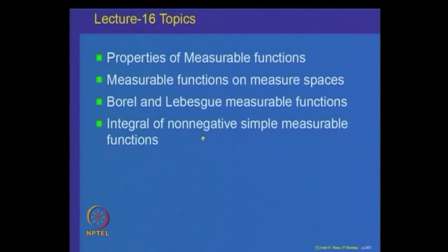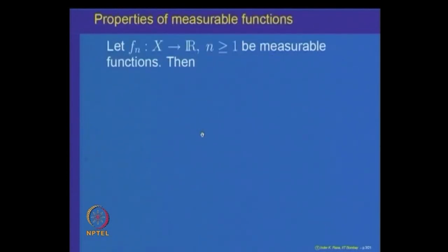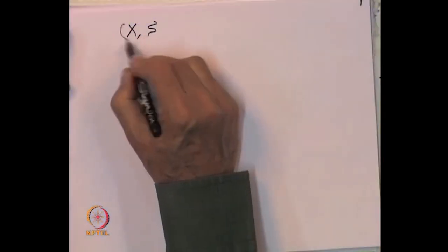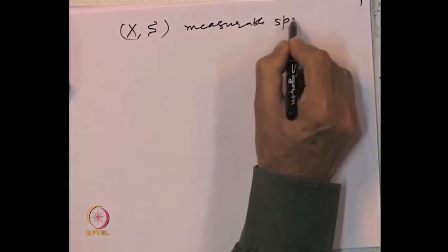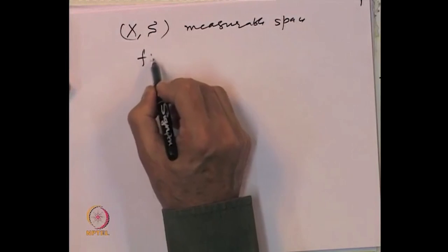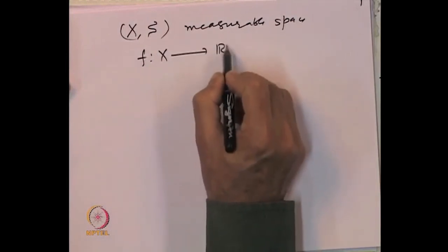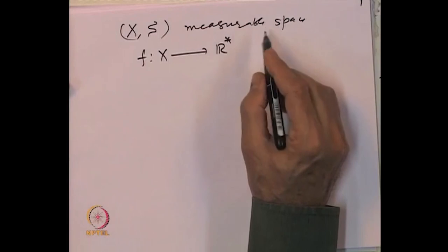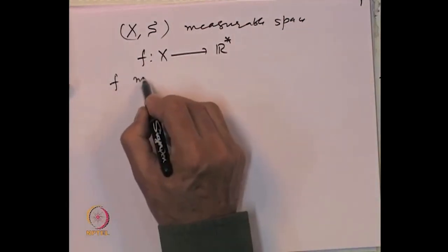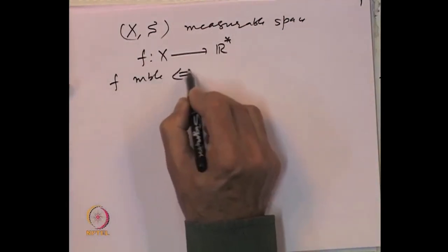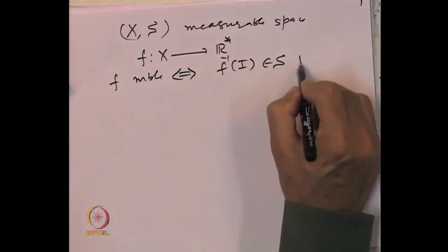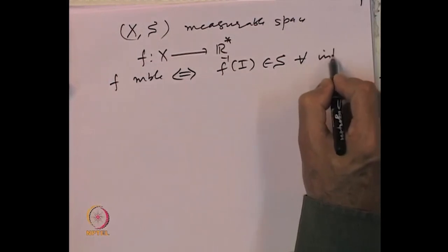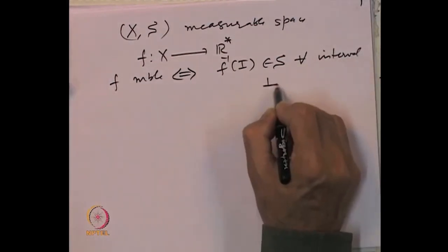Let us recall what we had done regarding measurable functions. We said that if X, S is a measurable space and f is a function from X to R-star, then saying that f is measurable is the same as saying the inverse image of every interval I belongs to S, for every interval I.